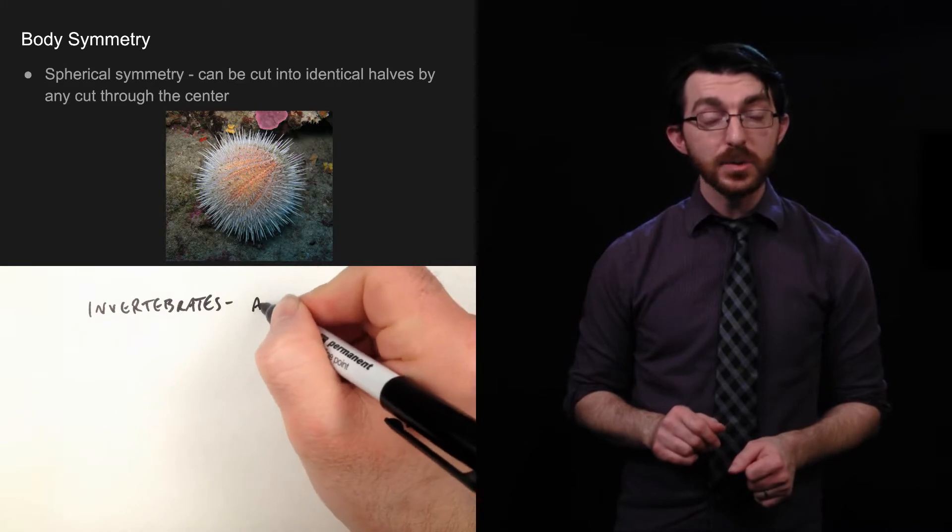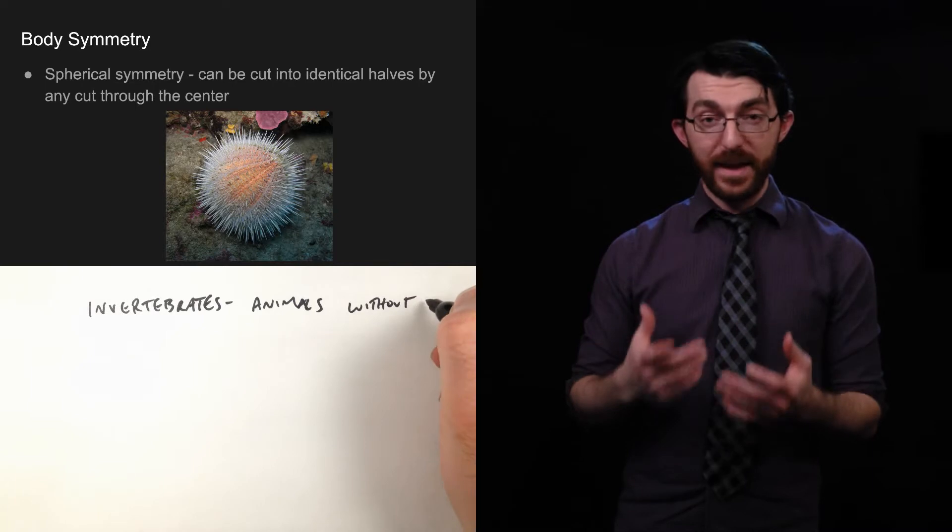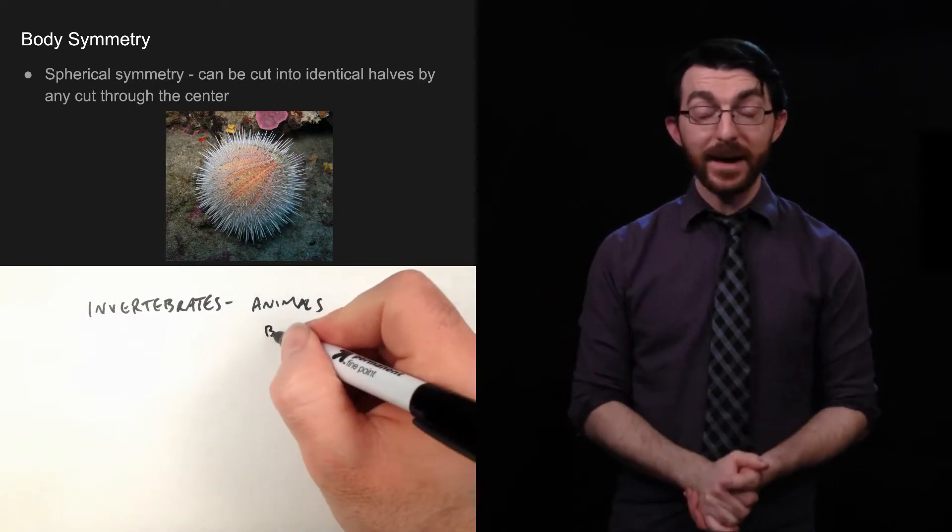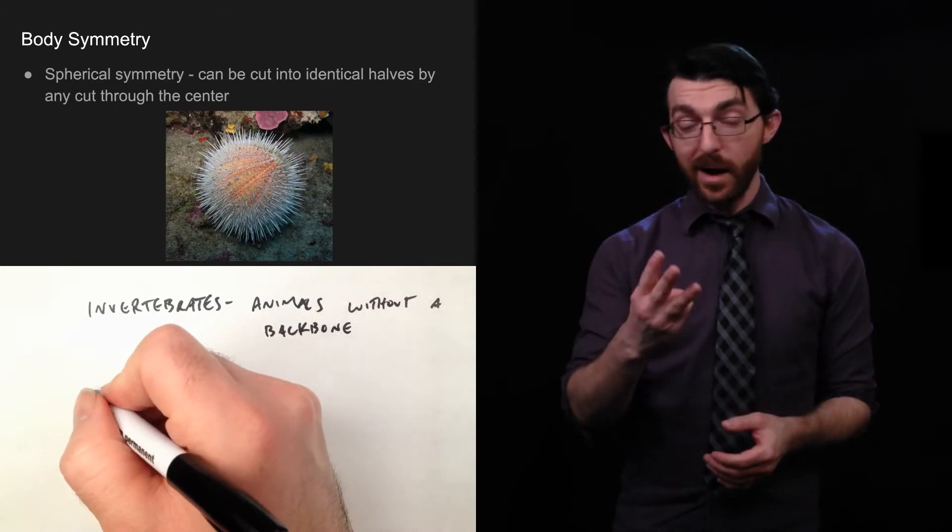If we're going to talk about animals, we need to talk about body shapes. And the best, most basic way to talk about body shapes is to talk about body symmetry. And there are three kinds.